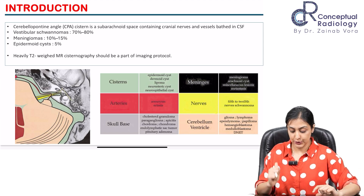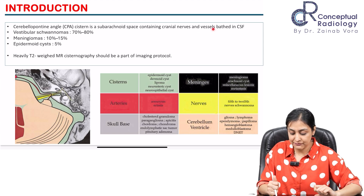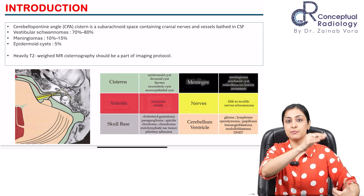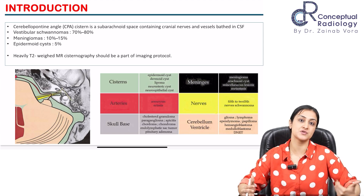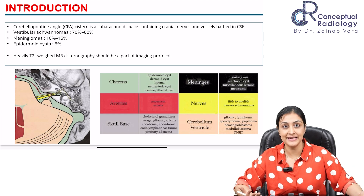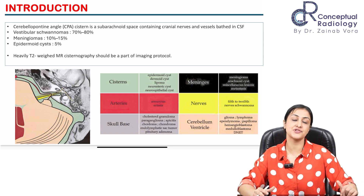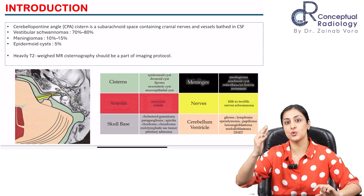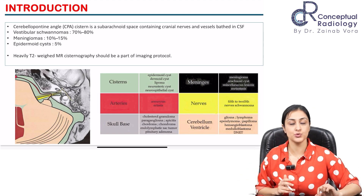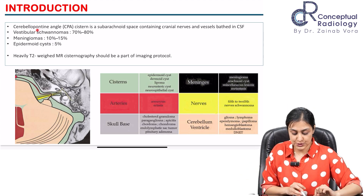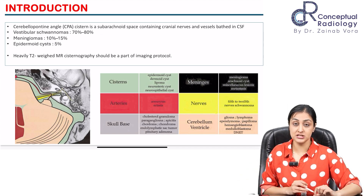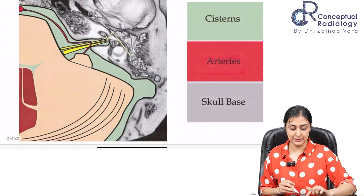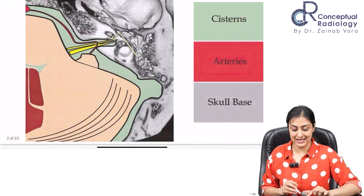We also have vessels here — the basilar artery from the pons gives branches like the anterior inferior cerebellar artery (AICA) and posterior inferior cerebellar artery (PICA), which can travel close to the CP angle. This is what the cistern actually encloses.